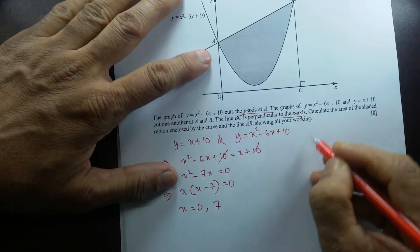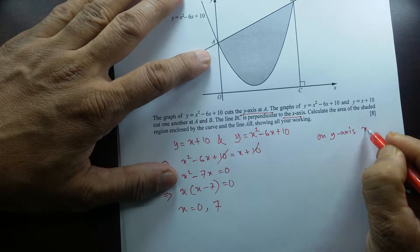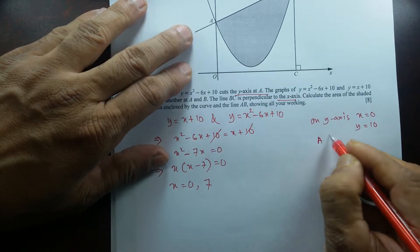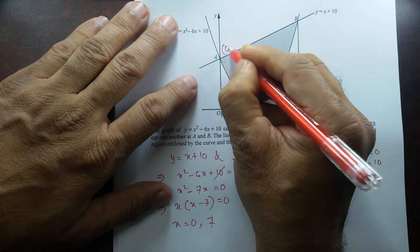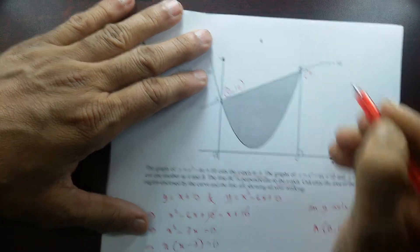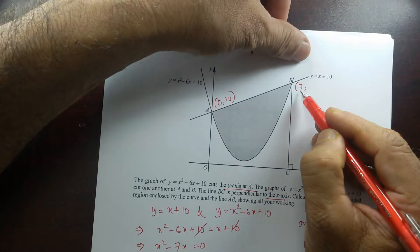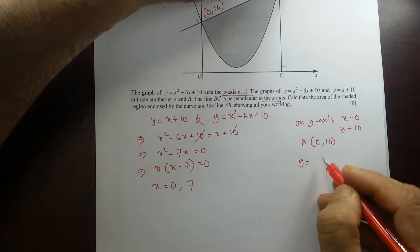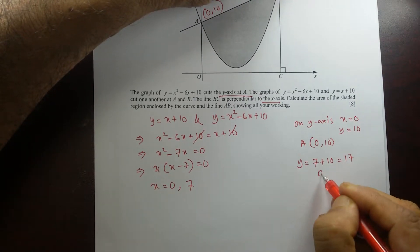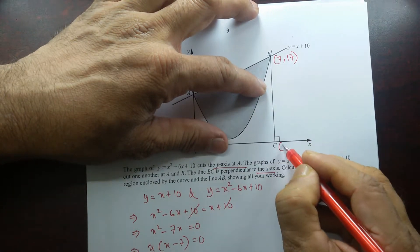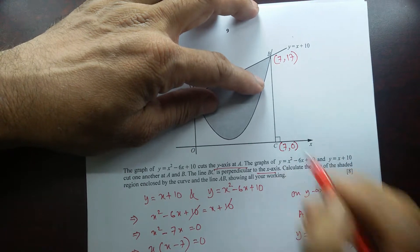On the y-axis, x equals 0. Substituting into the line equation, y equals 10. So coordinates of A are (0, 10). For B, the x-coordinate is 7. Using y equals x plus 10: y equals 7 plus 10 equals 17. So coordinates of B are (7, 17). Since BC is perpendicular to the x-axis, C has x-coordinate 7 and y equals 0, so C is (7, 0).